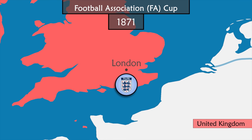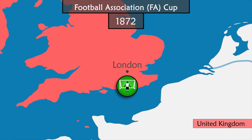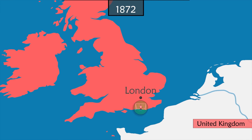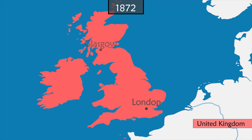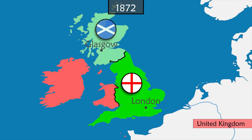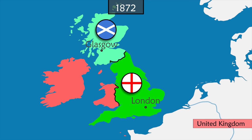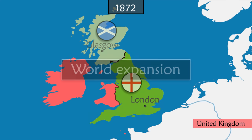In 1872, the first international match between England and Scotland takes place and ends in a draw, zero to zero.